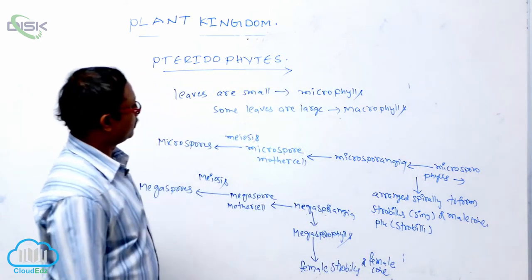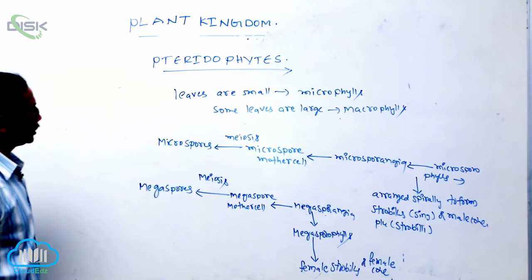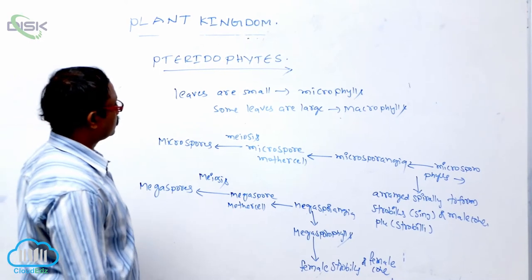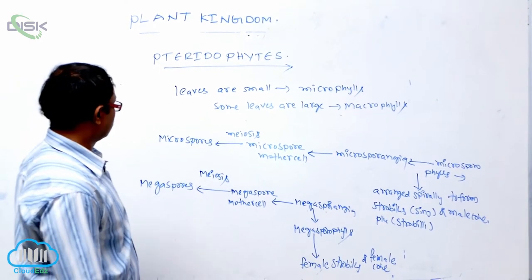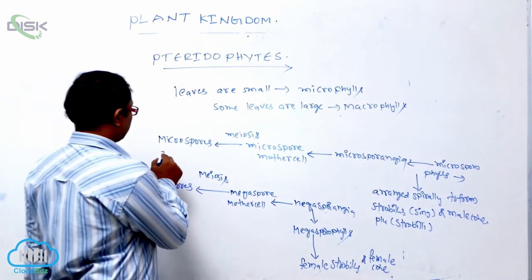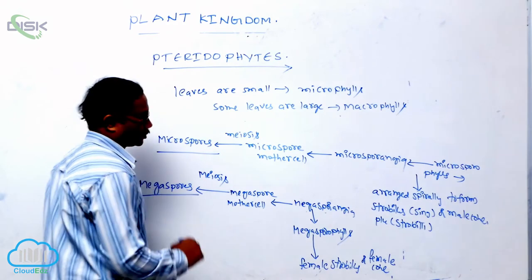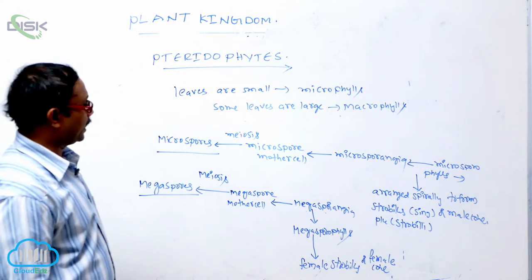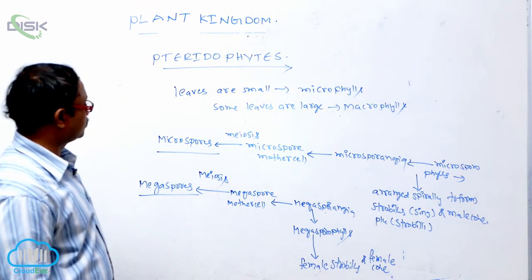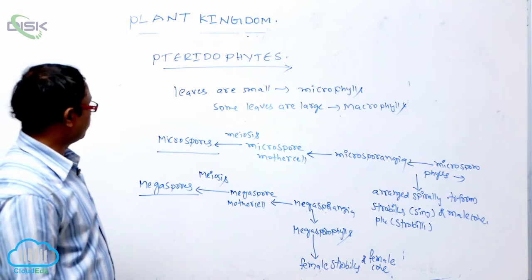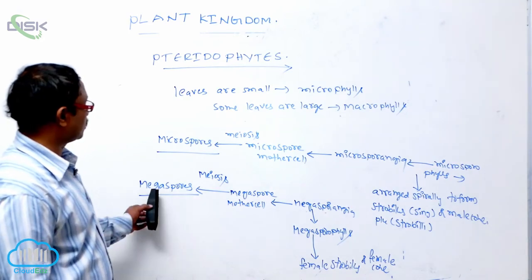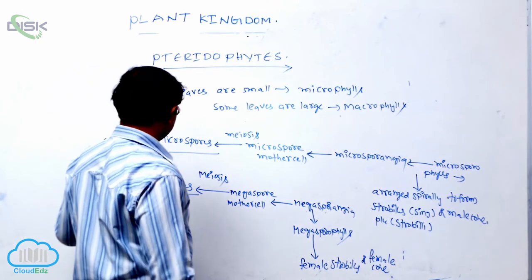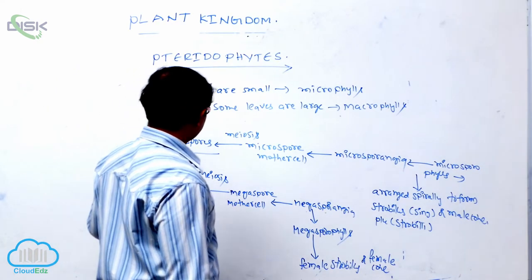This is known as the development of microspores and megaspores. The male plant produces microspores and the female plant produces megaspores. This is an important point.